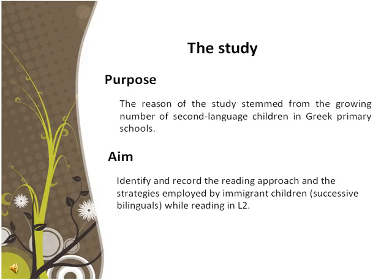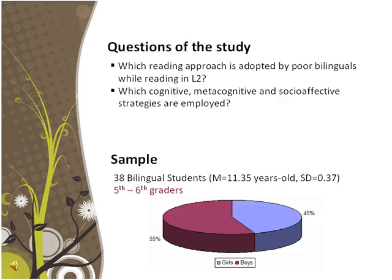The purpose of the study derived from the influence of immigrants and thus bilingual children in Greek primary schools in recent decades. The present study attempts to identify and record the reading approach and strategies employed by successive bilingual children while reading in L2. The research questions posed were: which reading approach is adopted by poor bilingual readers while reading in L2, and which cognitive, metacognitive, and socio-affective strategies are employed?